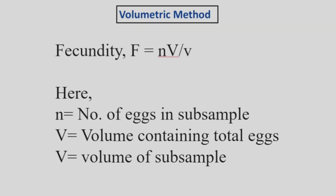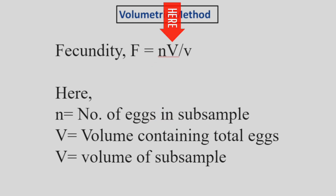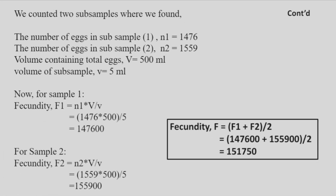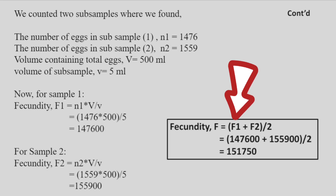Using the formula for fecundity — number of eggs in the subsample multiplied by total volume divided by the volume of subsample — we calculated the total fecundity. For the first subsample, fecundity was 147,600 eggs. For the second subsample, it was 155,900 eggs. Finally, we took the average of these two values to get an estimated total fecundity of 151,750 eggs.